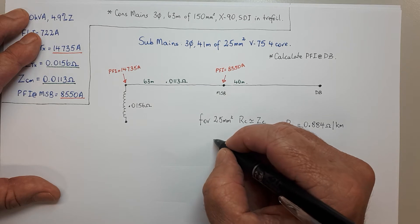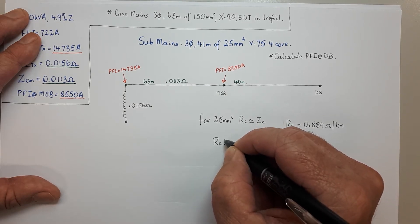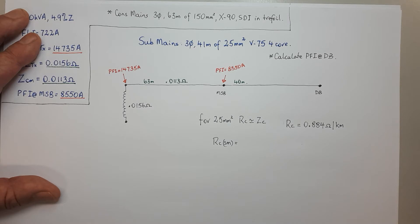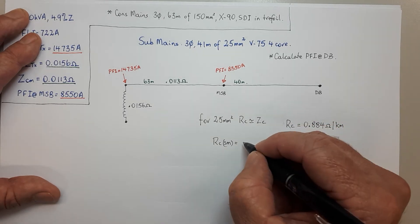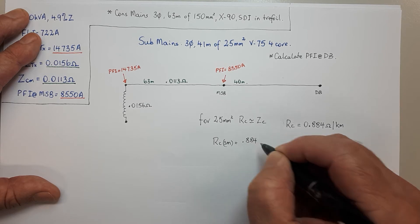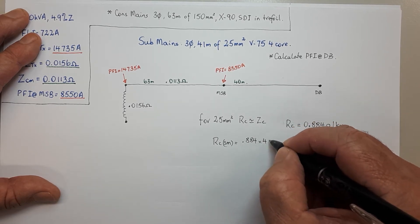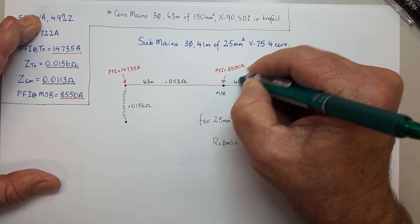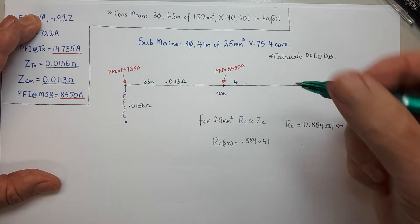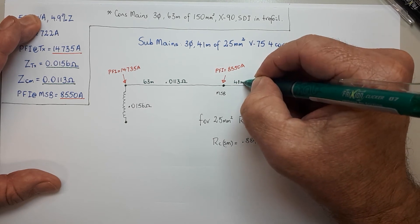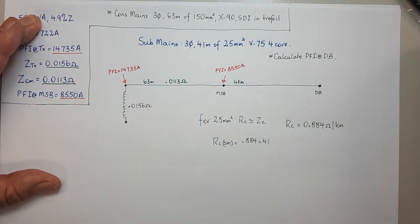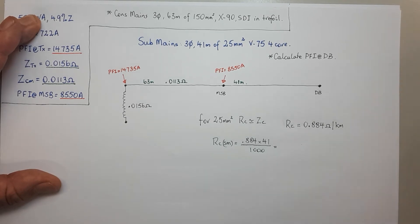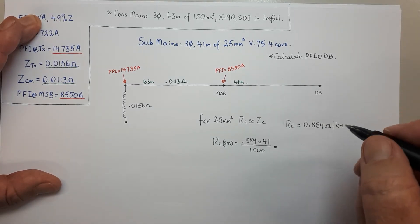Therefore we can work out the RC for the sub-main: 0.884 ohms per kilometre. Hopefully you picked up the mistake I made — deliberate TAFE teacher mistake. I put in 40 metres there but it's actually 41. I advise you to get one of these rub-out pens, they're awesome. So that's 41 metres, in line with what it is there. Over 1,000 of course, and from banging that into the calculator we get 0.0362.